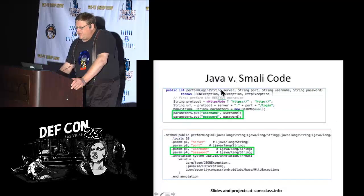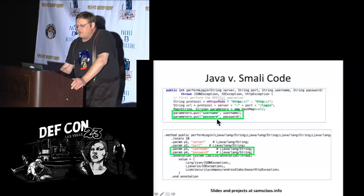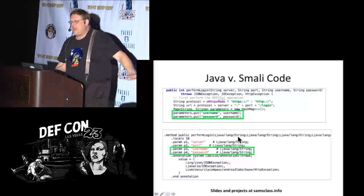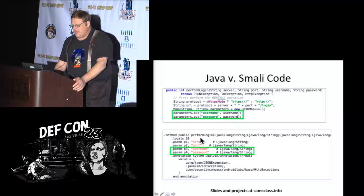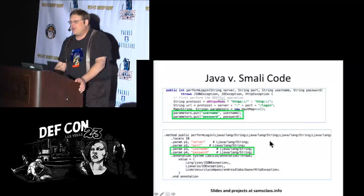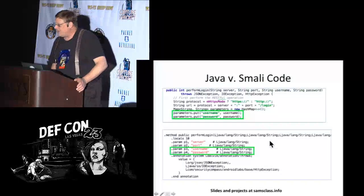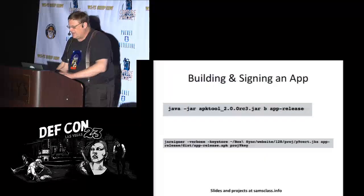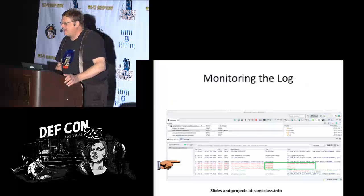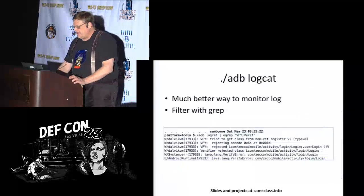Here's the difference between Java and Smali. The app developer saw a Java function to perform a login, with two parameters called username and password. What I find by decoding the APK is Smali — 'perform_login' is still here, with parameter three and parameter four being username and password. Really not much harder to read or modify than the original Java. You can rebuild the app, re-sign it with your own self-signed key, and run it on a phone.